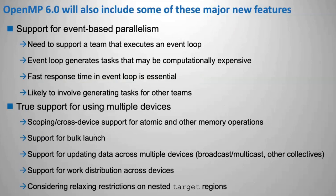A couple other things that we're actively working on: one thing we've been very actively considering is support for event-based parallelism. This basically allows you to execute an event loop with one parallel team and have that event loop generate tasks that are then explicitly going to be executed by a different team. This will require us to have a handle that says, this is the team I want to execute this task. For example, if you have an event loop where you're observing mouse events, you can generate a task that might do something fairly heavyweight in computation, such as doing a DGEMM, and execute that off in a different team while still getting responsiveness with the threads monitoring the event loop.